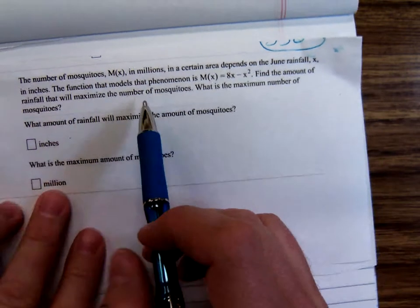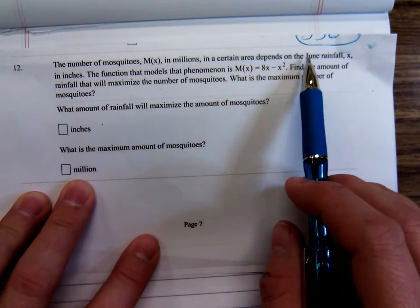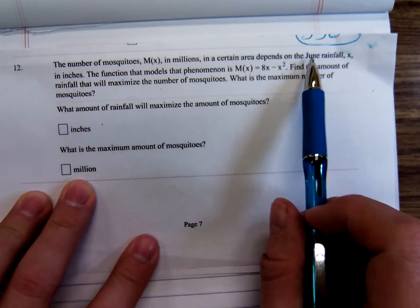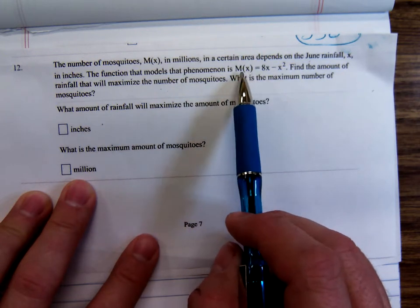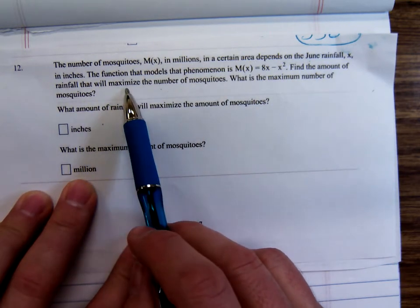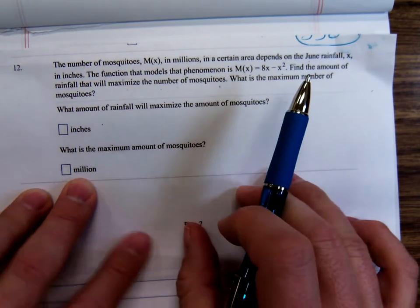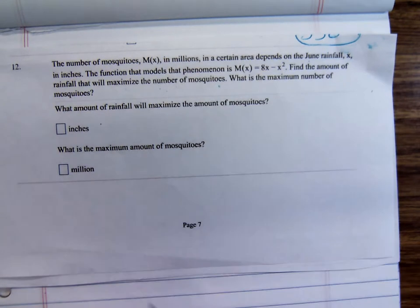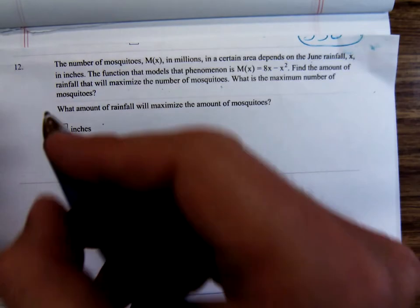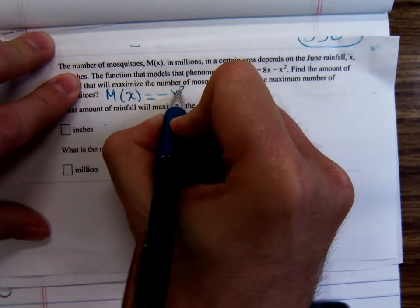The number of mosquitoes, in millions, in a certain area depends on the June rainfall x in inches. The function that models this phenomenon is M(x) = 8x - x². Find the amount of rainfall that maximizes the number of mosquitoes. This function should be written ax² + bx + c, so I'm going to write it M(x) = -x² + 8x.